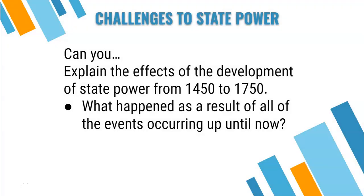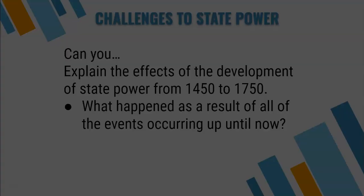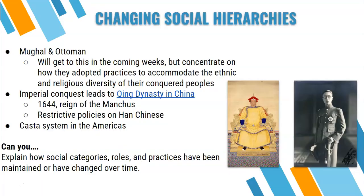Can you explain the effects of the development of state power from 1450 to 1750? That means: what happened as a result of all these events? The effects of state power development, especially from mercantilism, will lead to many, many revolutions — we'll talk about those at the end of December and early January. Now, changing social hierarchies: the Mughal and Ottoman empires are relevant here.